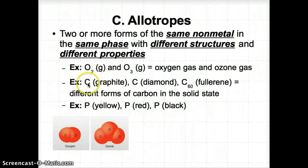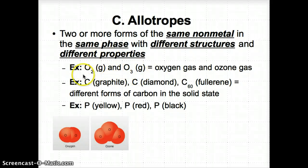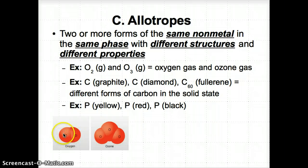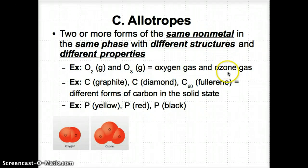Three examples are oxygen, carbon, and phosphorus. Oxygen has two allotropes: O₂ gas (oxygen gas) and O₃ gas (ozone gas). The non-metal O is the same in both, and they're both in the gas phase. But O₂ has two oxygen atoms while O₃ has three, so they have different structures and therefore different properties.